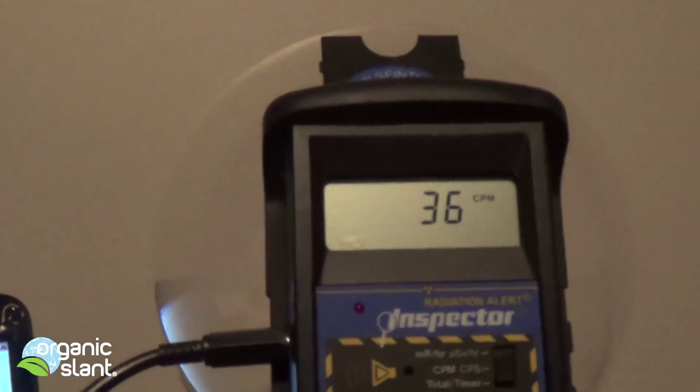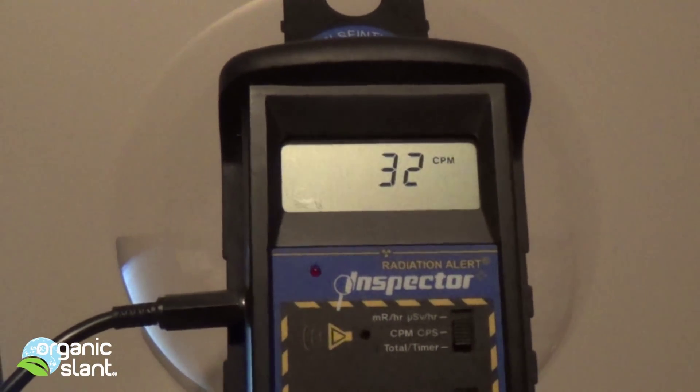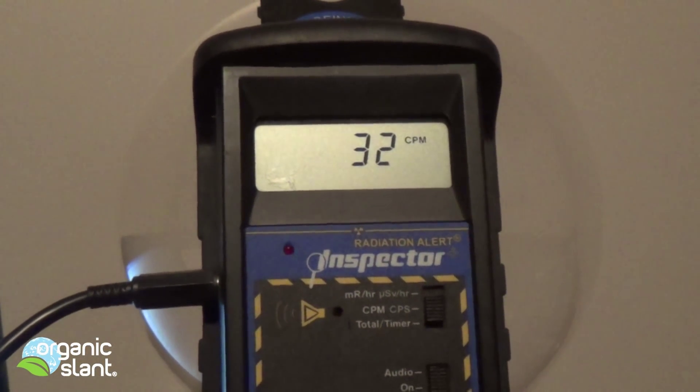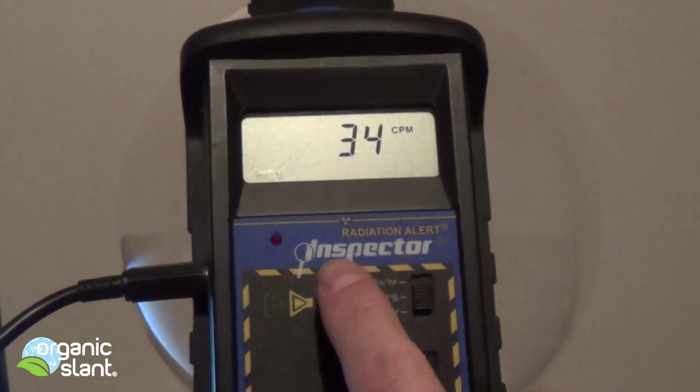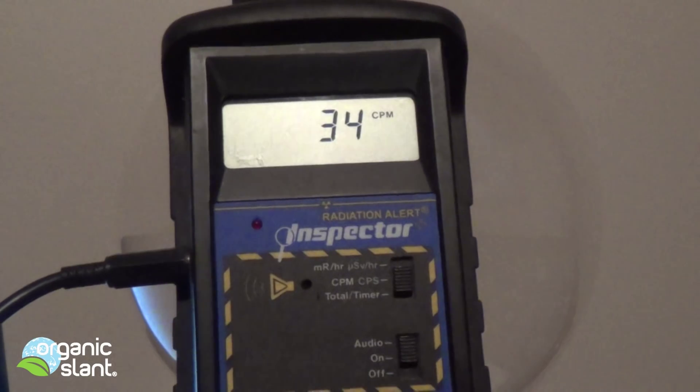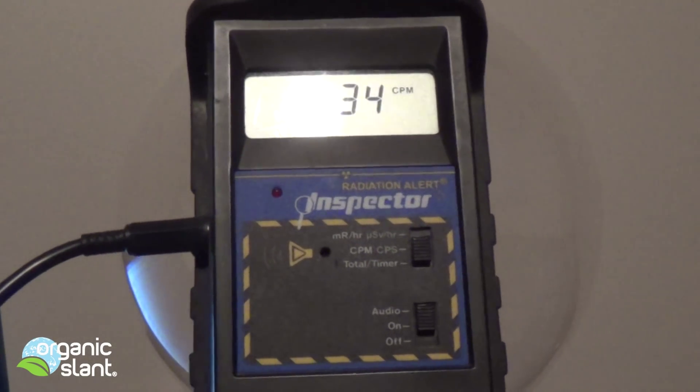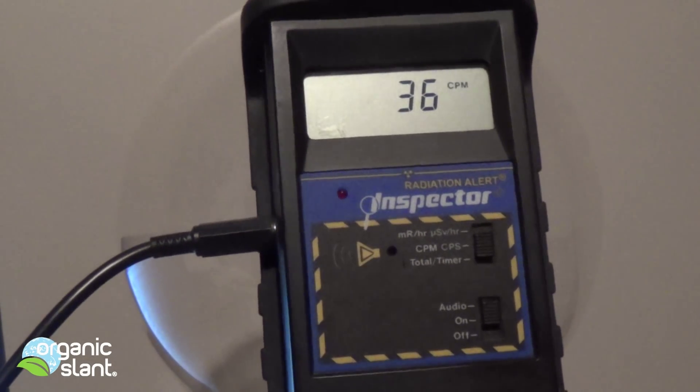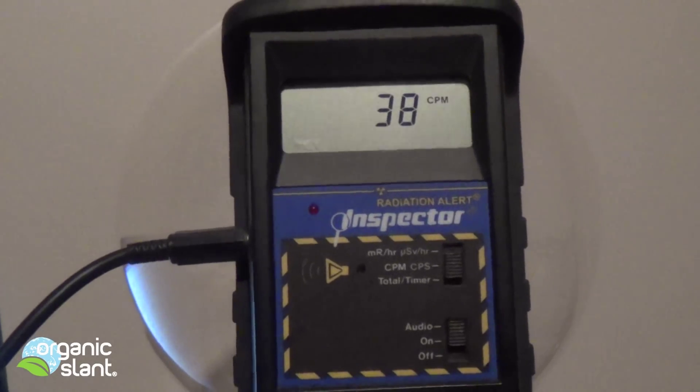I think it's picking up x-ray radiation because this Geiger counter, which I recommend, picks up alpha, beta, gamma, and x-ray radiation. Now enough of my talking. Watch what happens at these CPMs when they go on.